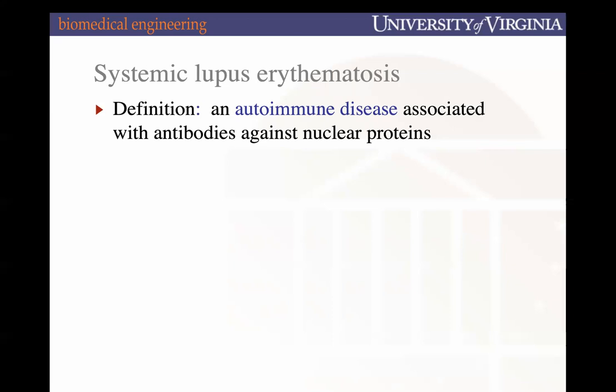Typically our immune systems are designed to identify self as self and foreign pathogens as foreign, and attack and protect us from them. Autoimmune diseases are when the self — or some specific part of the self — is identified as foreign and attacked. In this case, the self that's identified as foreign is nuclear proteins.